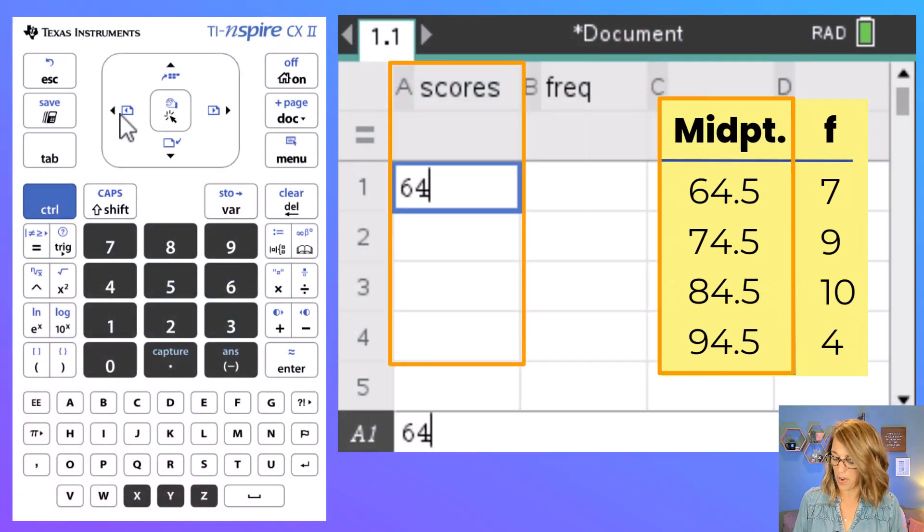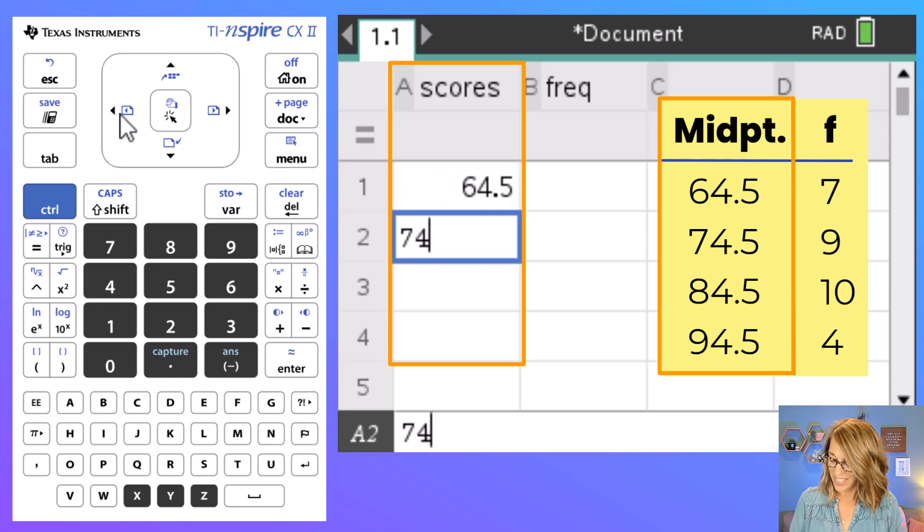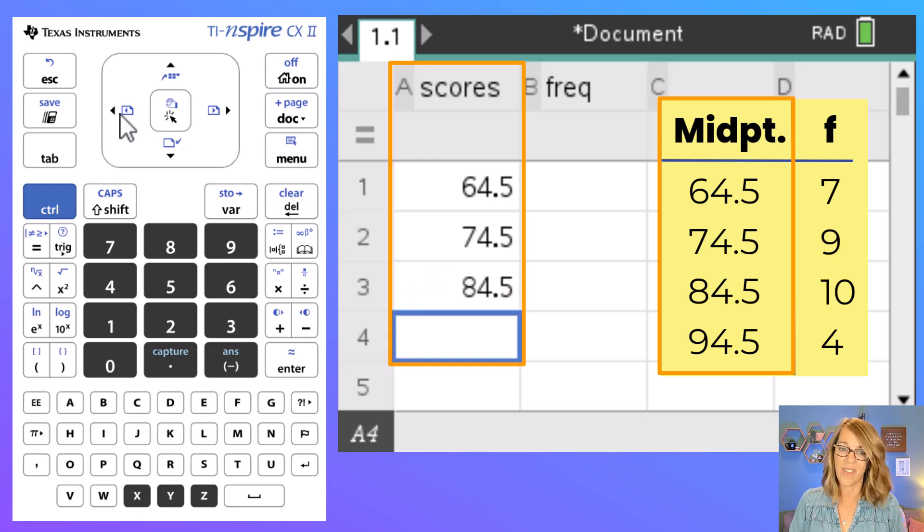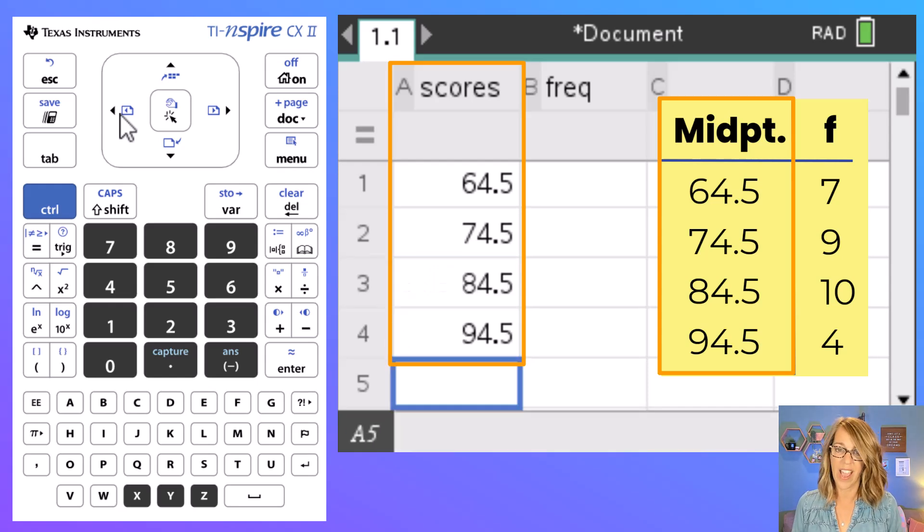So I've got 64.5. I'm in that first column next to the number one and then I hit enter. 74.5, 84.5, and 94.5.